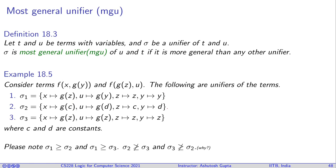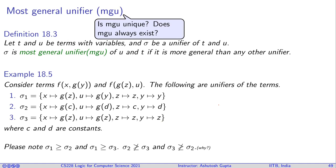Sigma_1 is the most general unifier, and sigma_2 and sigma_3 are smaller unifiers. The remaining questions are: is there always a most general unifier, is it unique, and does it always exist? Let's dive into these questions.